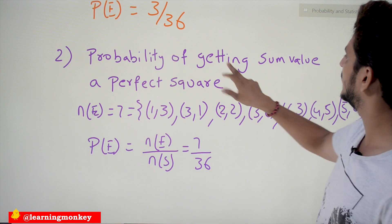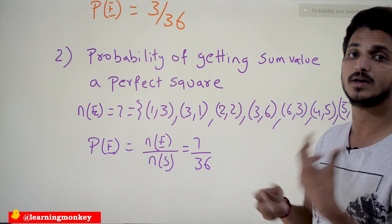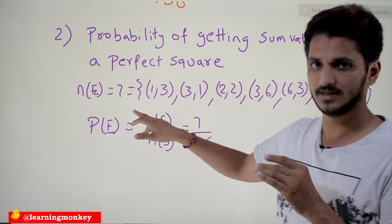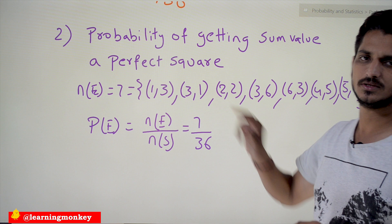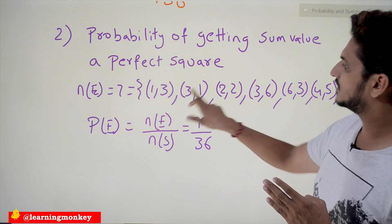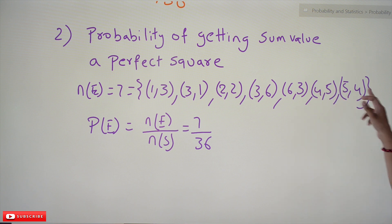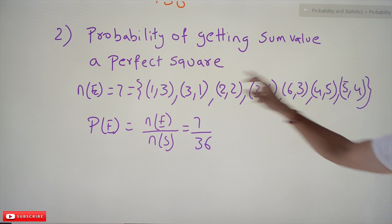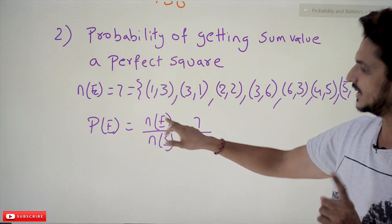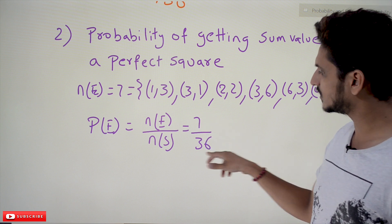Now the second question: probability of getting a sum that is a perfect square when rolling two dice. The sum of both dice values should be a perfect square. N(E) = 7. The 7 elements are: (1,3) — sum 4, a perfect square; (3,1) — sum 4; (2,2) — sum 4; (3,6) — sum 9, a perfect square; (6,3) — sum 9; (4,5) — sum 9; (5,4) — sum 9. Probability of E = 7/36.